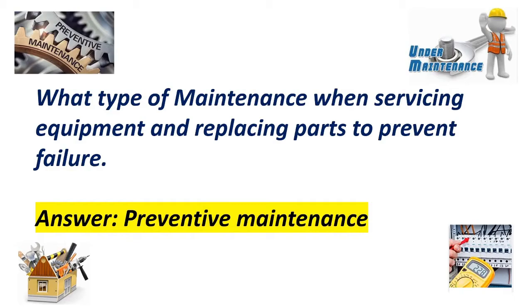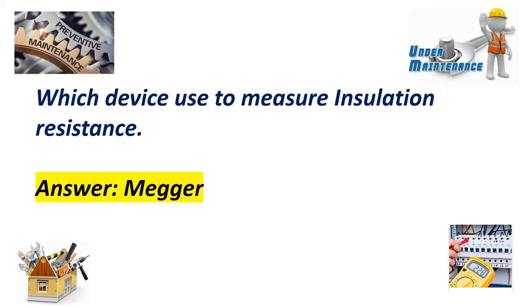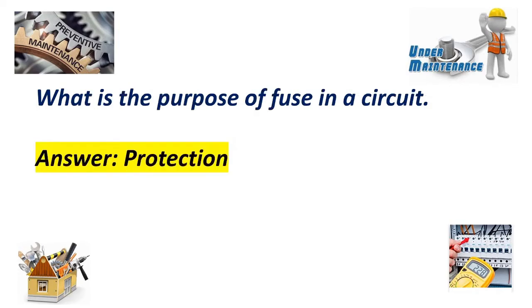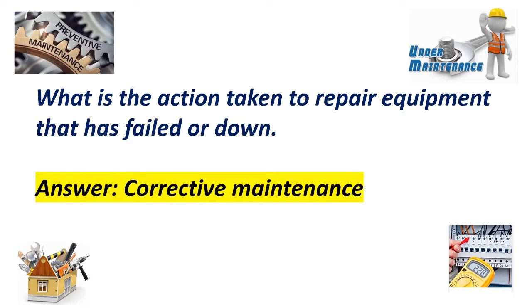Question number one: What type of maintenance when servicing equipment and replacing parts to prevent failure? Answer: Preventive maintenance. Which device is used to measure insulation resistance? Answer: Megger. What is the purpose of the fuse in a circuit? Answer: Protection. What is the action taken to repair equipment that has failed or is down? Answer: Corrective maintenance.